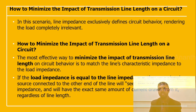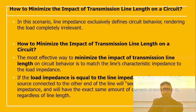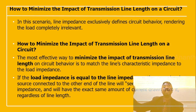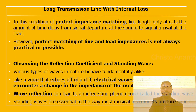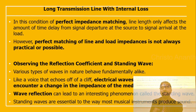The line impedance defines the circuit behavior, rendering the load completely irrelevant. The most effective way to minimize the impact of transmission line length is to match the line's characteristic impedance to the load impedance. If the load impedance equals the line impedance, any signal source connected to the other end will see exactly the same impedance and have the same current regardless of line length. With perfect impedance matching, line length only affects the time delay from source to load — though perfect matching is not always practically possible.